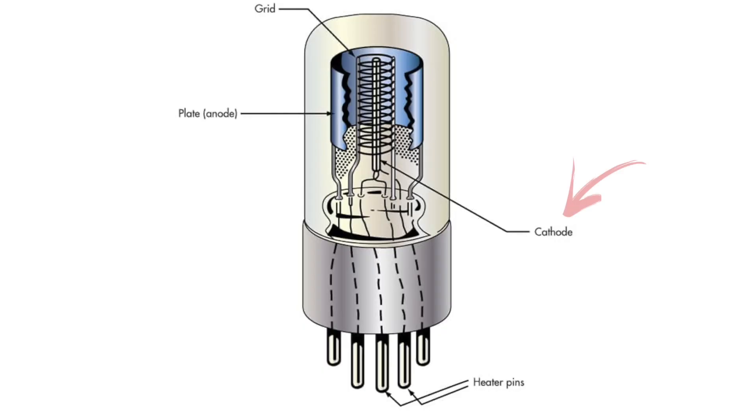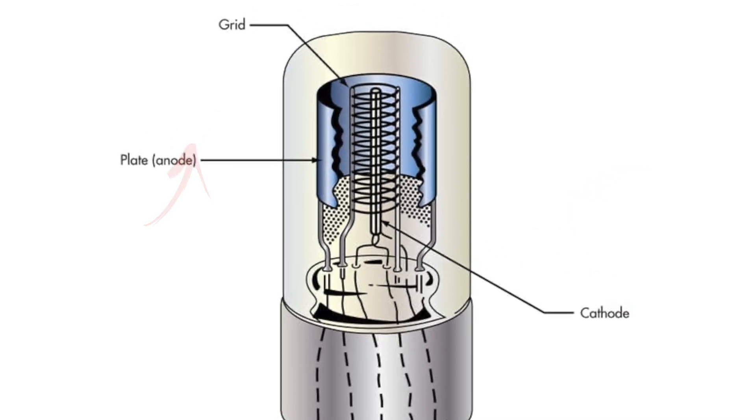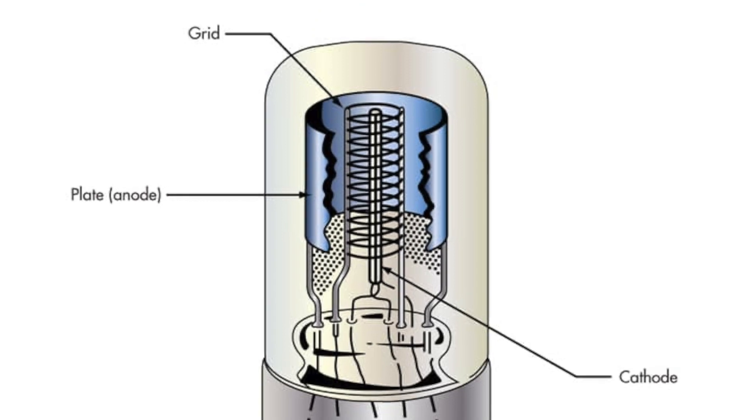But what is tube saturation? Tube saturation occurs when the diodes in a tube are electronically saturated and no more electrons can travel from the tube's cathode to the tube's anode, due to a positive charge in the grid between the two components.